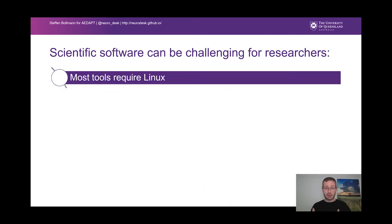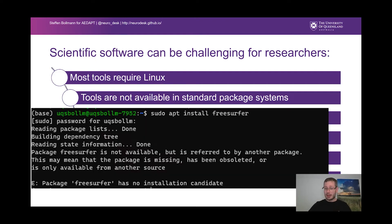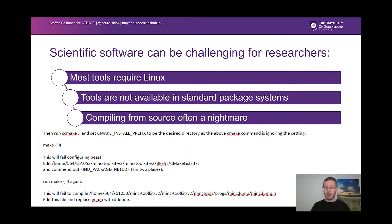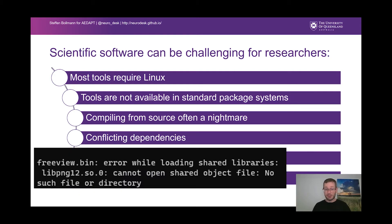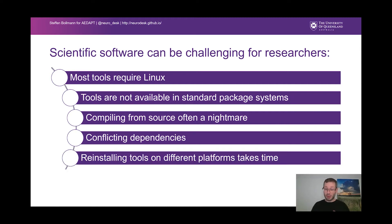Scientific software can be quite challenging for researchers. Most tools require Linux, but they're not installable via the standard package systems because no one packaged them — we're not software developers and we don't have time to do this as researchers. Of course, people say, well, just go and compile it from source. But the problem is we have quite old operating systems on our high-performance computing systems, and these antique Linux kernels can cause some interesting problems when compiling software. We also end up with conflicting dependencies, so we can't easily move our software between operating systems. Reinstalling these tools on different platforms takes a lot of time, and this is time where we can't do research.